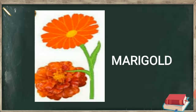This is marigold flower. When your elders — your parents and grandparents — do Bhagwan ji ki pooja, they offer this marigold flower to God. When we worship God, we give this flower to God. So the color of the marigold flower is orange.